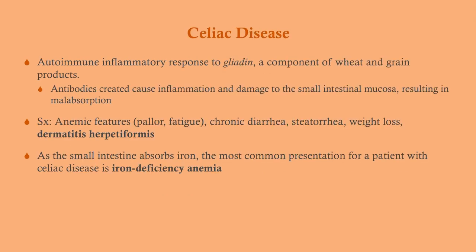What is celiac disease? It's an autoimmune inflammatory response to gliadin, which is a component of wheat and grain products, and it's one of the more common causes of malabsorption in otherwise healthy people. These antibodies create inflammation and damage to the small intestinal mucosa — just because of the allergic response, you get this collateral damage and it results in malabsorption.